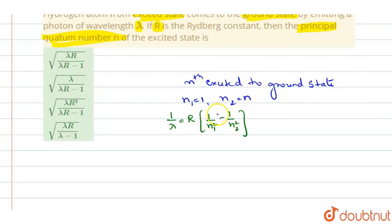Now, substituting all the excited state values, you will get it as 1 by... See, R will take it to the other side. So, we will write it as 1 by R lambda is equal to... N1 is 1, so you will get it as 1 by 1 minus 1 by n square.